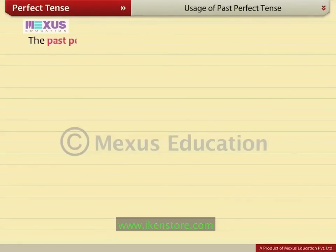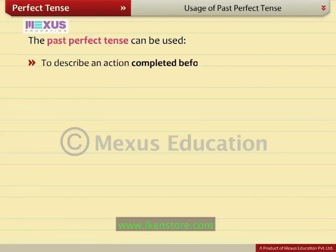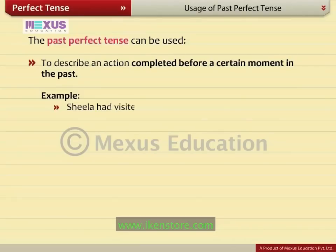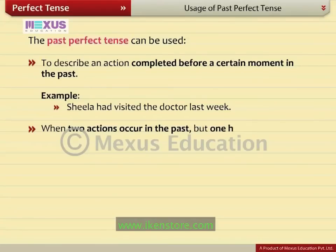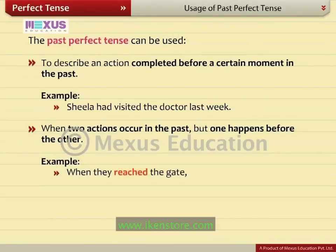The past perfect tense can be used to describe an action completed before a certain moment in the past. For example, Sheila had visited the doctor last week. When two actions occur in the past but one happens before the other, the action completed first is in the simple past while the other is in the past perfect. For example, when they reached the gate, the clock had already struck twelve.